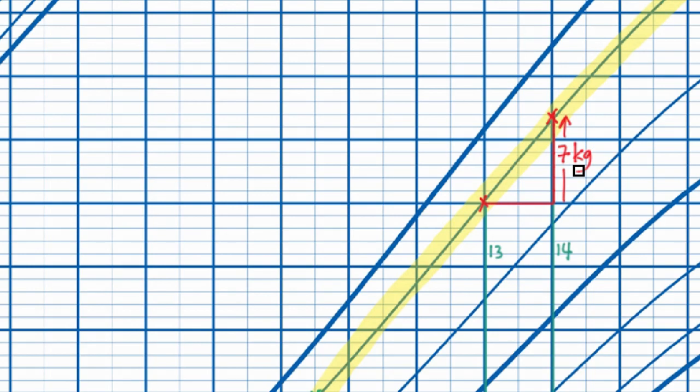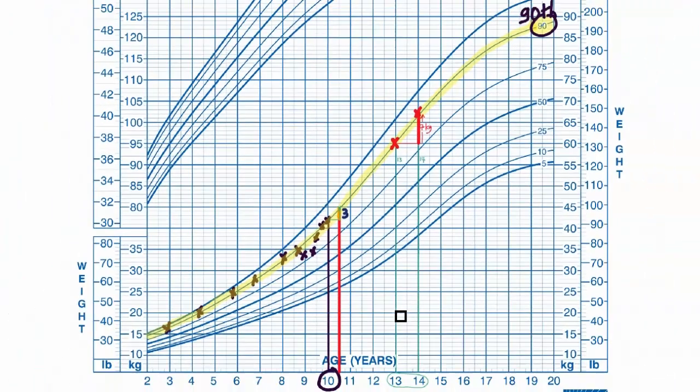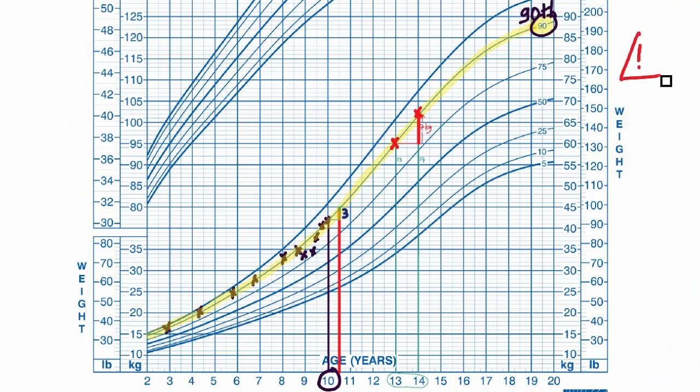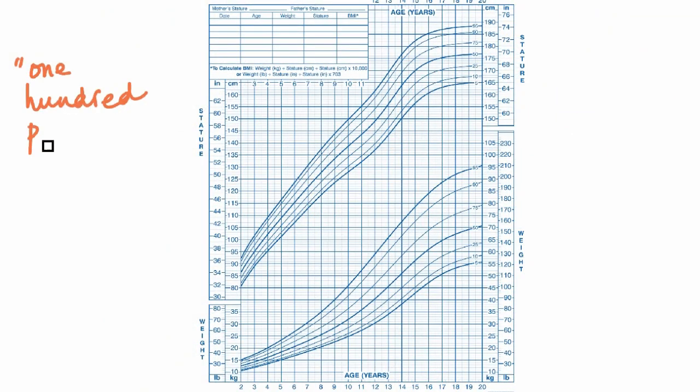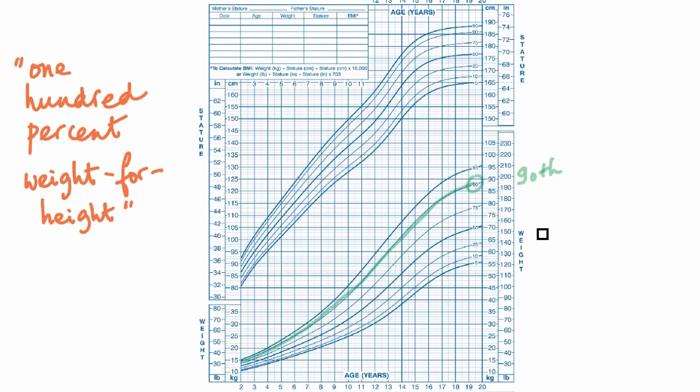So, a growth chart can help alert you that your child might be becoming underweight and vulnerable to relapse. By the way, just to clear up a common bit of confusion, especially if your clinicians are talking of things like 100% weight for height, this does not mean that the weight percentile is the same as the height percentile. There's no expectation at all for the two to match.